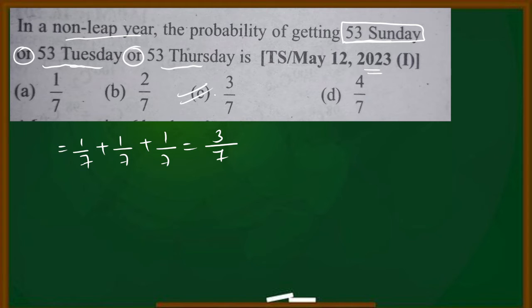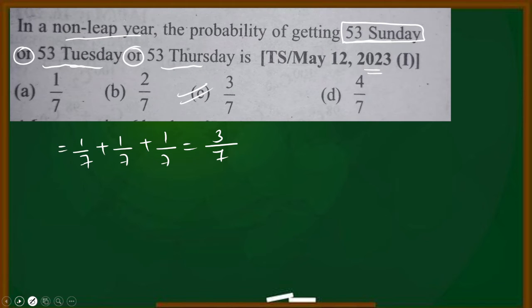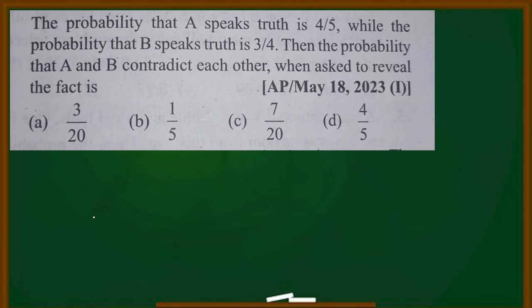So 3 by 7 is our answer for that question. Next, this is the first model — this is a leap year question. Okay, next equation.